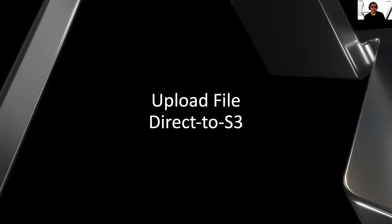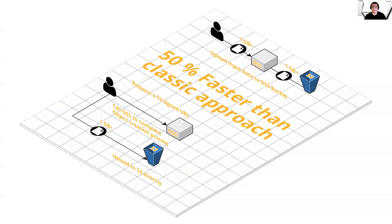What about uploading files directly to S3? The upload approach requests an S3 signed URL to upload an object, or an array of signed URLs to upload an object in multiple parts. We see an increase in performance of an average of 50% going directly to S3 when using larger files — files over 1GB in size. We expect that performance actually increases and scales with file size, so a 10GB file would see an even greater improvement.